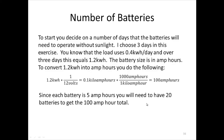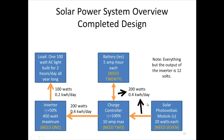We're now finished with our solar power system design calculation. To summarize: we need one inverter, two charge controllers, 20 batteries, and seven solar modules. The next step would be to evaluate how expensive this system would be — that's left as an exercise for you. Thanks for watching.